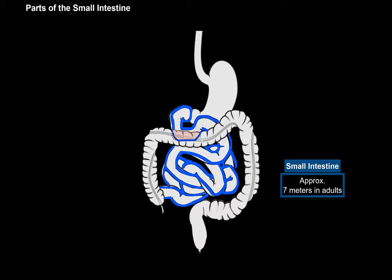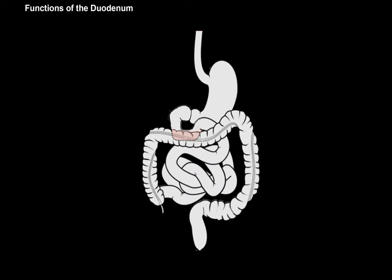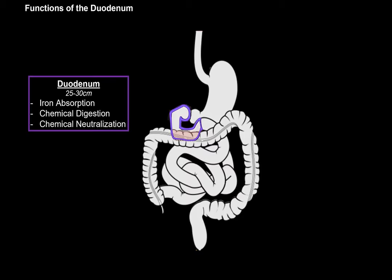Let's look at the parts of the small intestine to get a better sense of its anatomy, and we'll do the topography along the way as well. The first part is the duodenum, which is the shortest part of the small intestine. Not only is it the shortest, but it serves different functions as well. The duodenum is between 25 to 30 centimeters long, and it's mainly responsible for iron absorption, chemical digestion, and chemical neutralization.